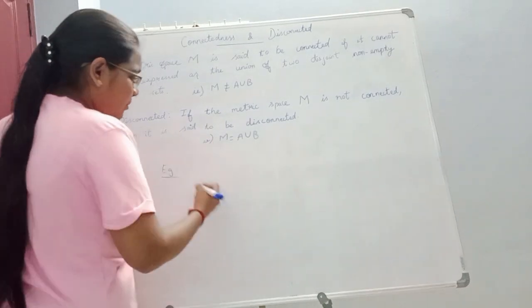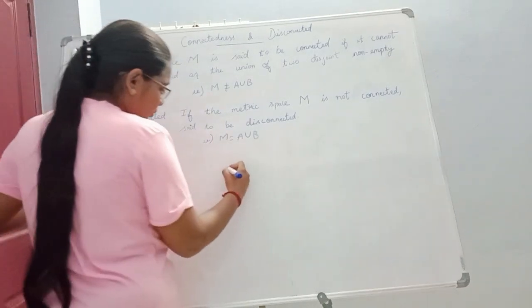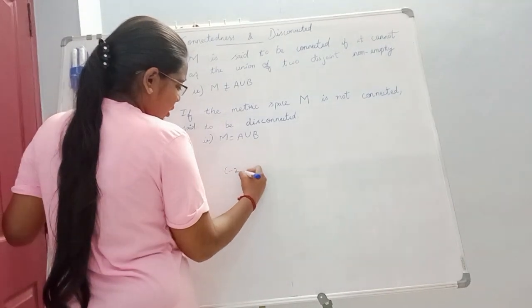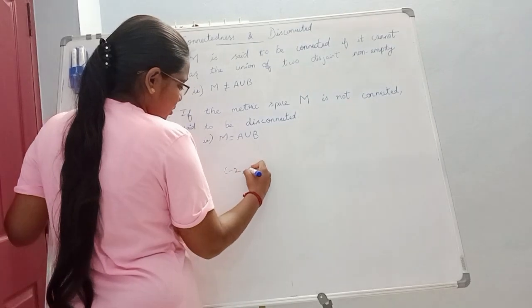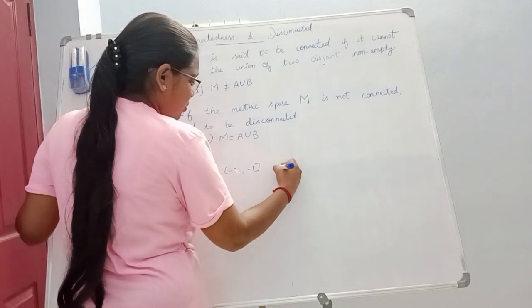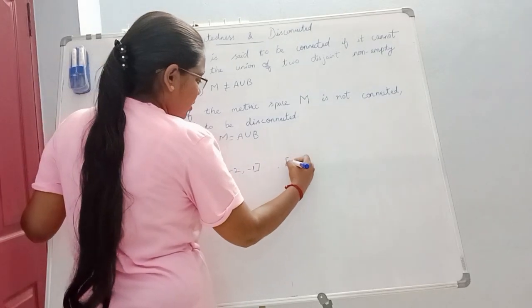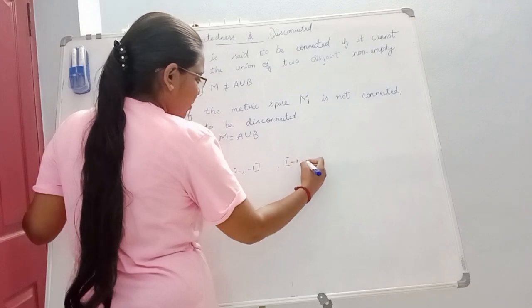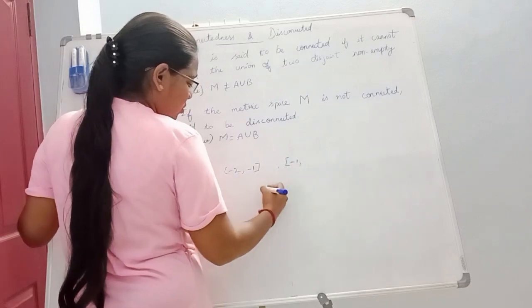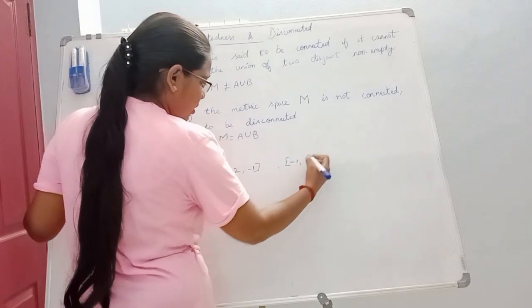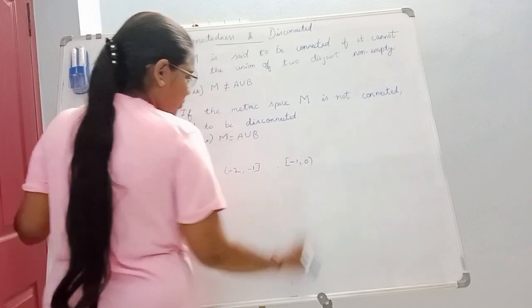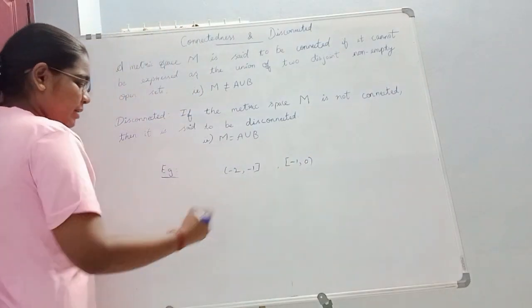For example, consider the set: minus 2 comma minus 1, and the next set minus 1 comma 0. Let's take this example.